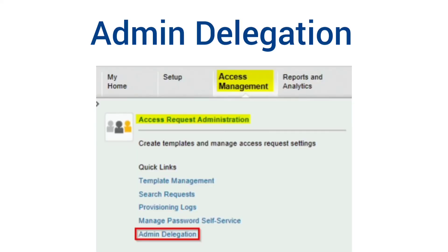The second option is admin delegation. Admin delegation is a feature of GRC Access Control that works very similarly to approver delegation. The only difference is that in this case, the GRC admin has the authorizations to delegate the responsibility of the delegators to other delegatees based on business requirements. During the absence of the approver, admin delegation is the best way to delegate approval to another approver to run the business smoothly. Using admin delegation, the GRC admin can add, modify, or delete delegations for the GRC Access Control application.